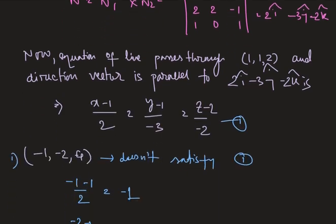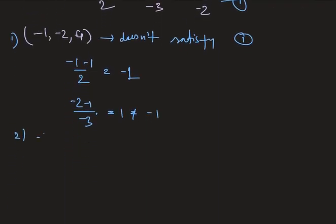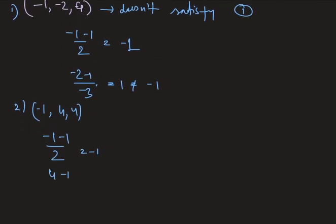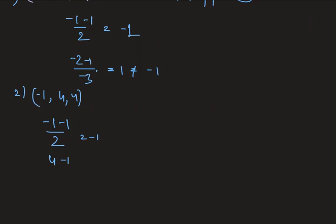Now let's check the second option which is minus 1, 4, 4. Therefore minus 1 minus 1 divided by 2 is minus 1. The next is 4 minus 1 divided by minus 3 which is also equals to minus 1, and lastly 4 minus 2 divided by minus 2, which is 2 by minus 2, equals minus 1. Therefore it satisfies the equation.